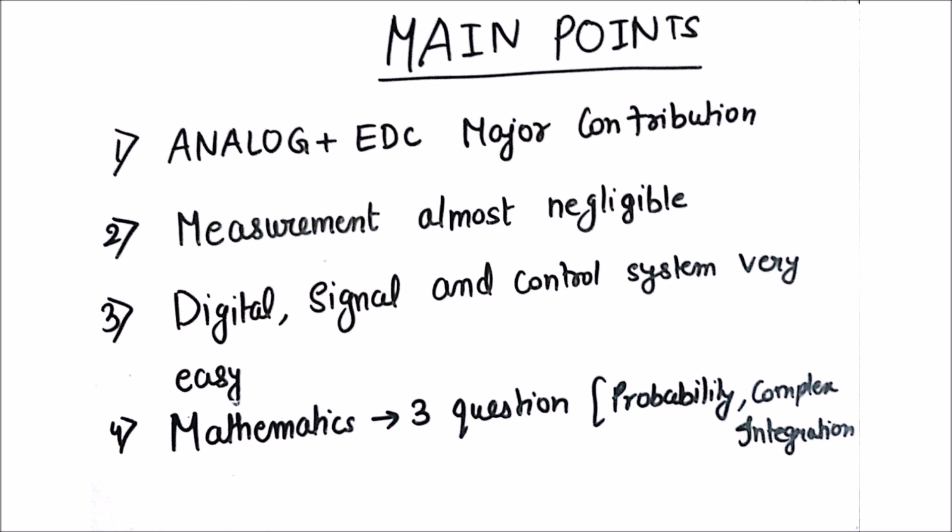Third, digital signal and control system were very easy. Three questions were asked from mathematics, in which two questions were from probability and one from complex integration. We will see that also. So let's start.